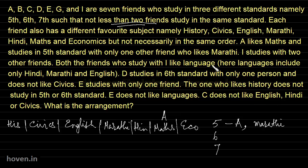A studies with two other friends. Both the friends who study with A like a language. Here languages include only Hindi, Marathi and English. So with A: Hindi, Marathi and English. So Hindi and English people are staying there, because Marathi is already adjusted in fifth standard.